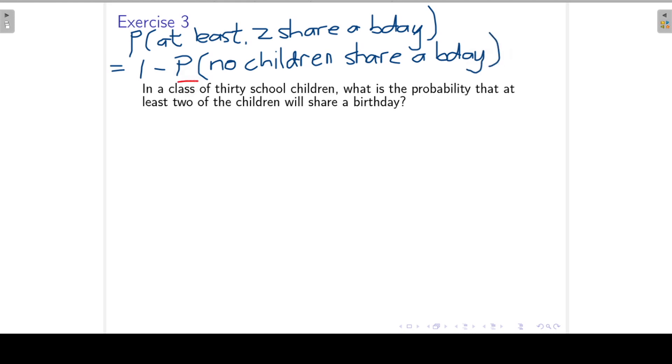So let's first concentrate on this complement, no children share a birthday. Now if I represent my 30 children each with a little block, there are 365 possibilities for the first child to have a birthday. Then to find the number of ways in which 30 children can have different birthdays, we can now say that the second child can have a birthday on any one of the remaining 364 days of the year.